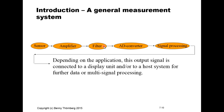The reason we convert the analog signal into a digital signal is that this sequence of digital numbers can then be used by an embedded computer for further digital signal processing. Depending on the application, the measurement system can be connected to an industrial control system, to a display unit, or to some other kind of host system.